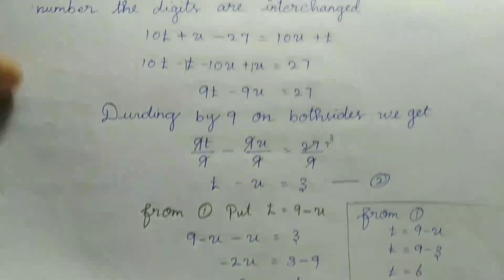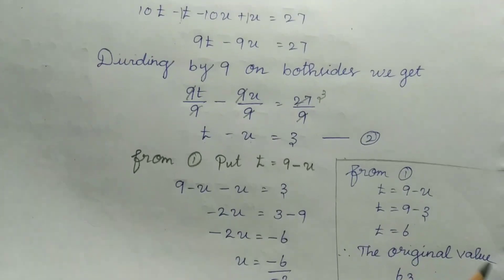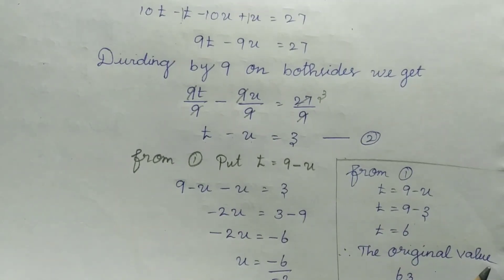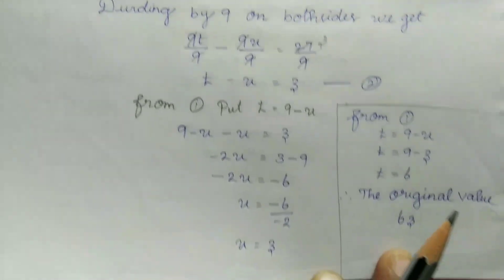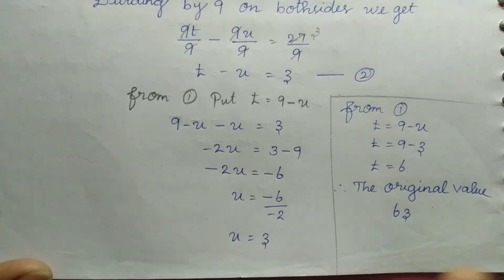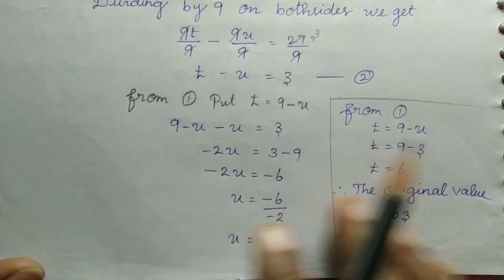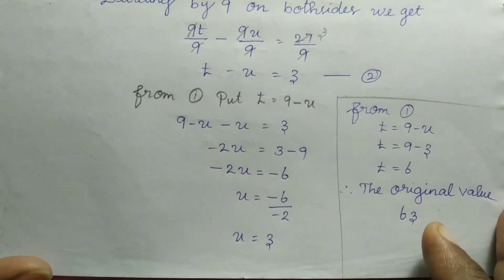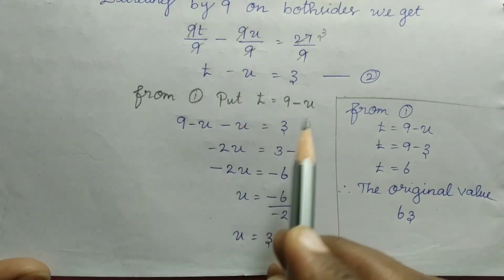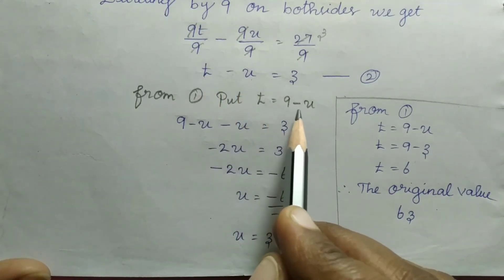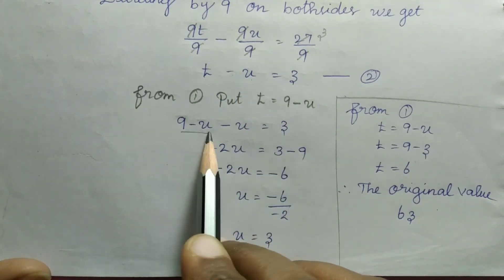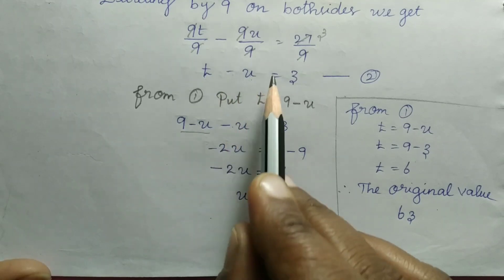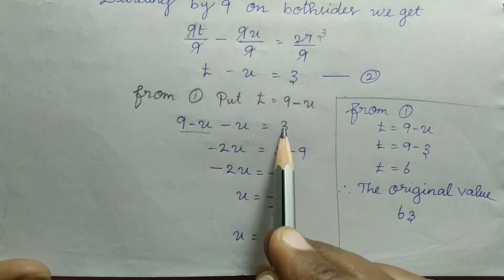Using substitution from equation number 1: t is equal to 9 minus u. Substitute that value here. 9 minus u, substitute the value, minus u, that is equal to 3.